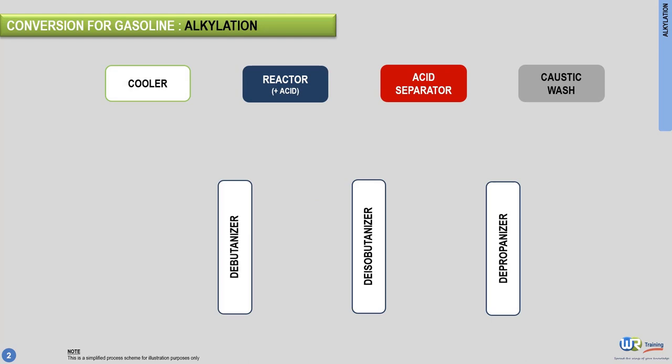The typical alkylation plant consists of seven parts: the cooler, the reactor, the acid separator, the caustic wash, and three consecutive splitters. The feed, which is a mixture of butene and isobutane, is first mixed with an acid catalyst. Most refineries use liquid sulfuric acid as catalyst.